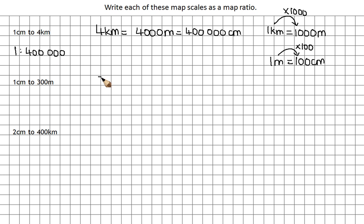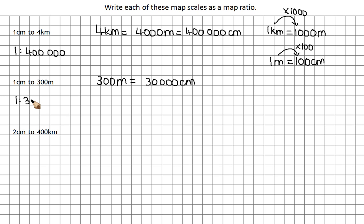The second part is exactly the same. So 300 m needs to be changed into cm. To get from m to cm we times by 100, so that gives us 30,000 cm. So my ratio is going to be 1 to 30,000. So 1 cm on the map is 30,000 cm in real life.